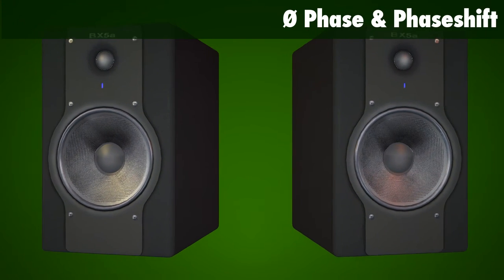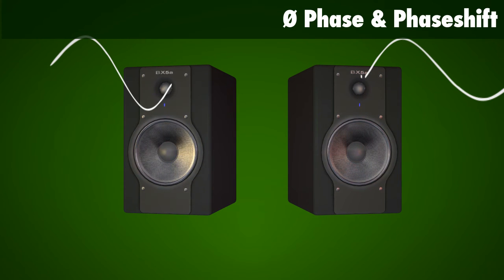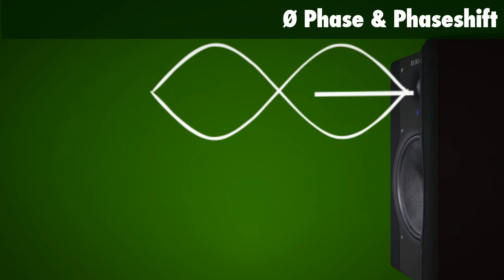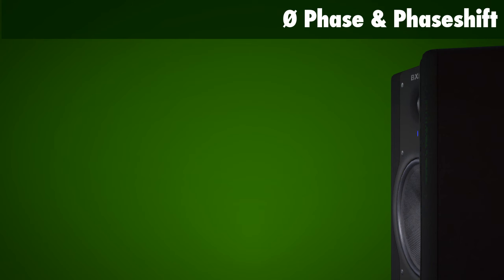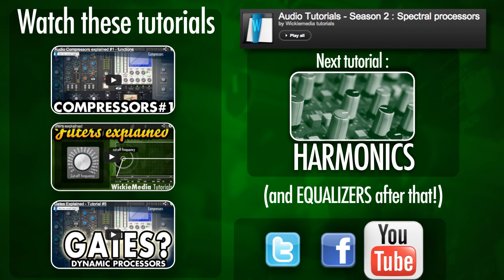Another trick could be to pan each of the two channels to a different direction — left and right — so they're not summed when they come out of your speakers. But when you mix down your track in mono, you will still have the problem, and on certain systems when you play back the song you will miss a lot of the frequency content. So this was the phasing tutorial for today — I hope you've learned something and I hope to see y'all soon.